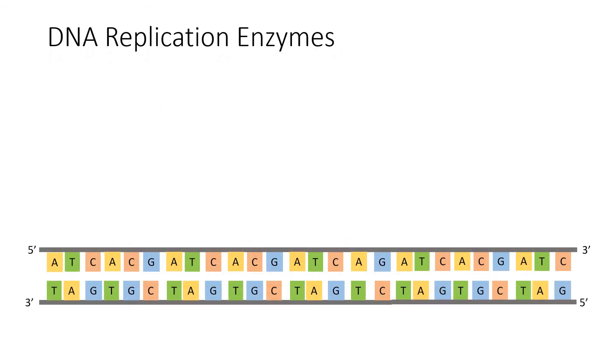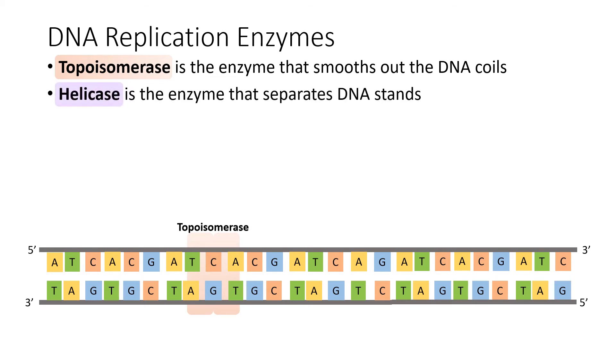No chemical process in the body is complete without those enzymes, and we're going to need a few to replicate our DNA. Now, keep in mind that DNA is a supercoiled coil, and it needs to be unfurled to replicate it. Enter topoisomerase. This is the enzyme that smooths out the DNA that's about to be replicated. And it's going to be ahead of the next enzyme, which is called helicase. Helicase is responsible for breaking those hydrogen bonds that keep the two DNA strands together, allowing the strands to separate.